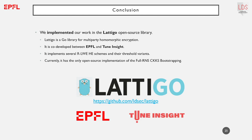Latigo is a Go library for multiparty homomorphic encryption co-developed between EPFL and TuneInsight, a recently launched startup that uses multiparty homomorphic encryption in secure federated learning applications. The library implements several ring learning with error schemes along with their threshold variants, including the FullRNS CKKS scheme and our bootstrapping procedure — currently the only open source implementation of the FullRNS CKKS bootstrapping. We hope that these results will encourage wider implementation and adoption. Thank you for your attention.